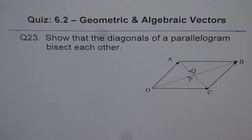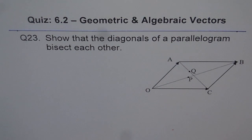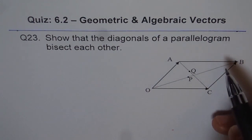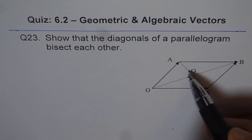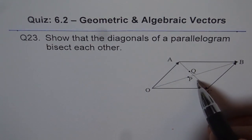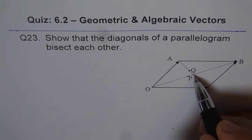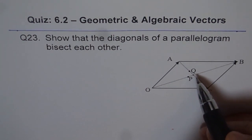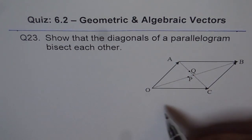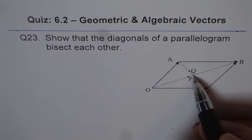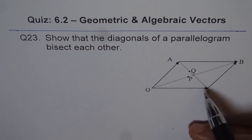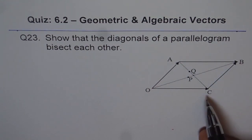Here is the solution for question 23. It says show that the diagonals of a parallelogram bisect each other. When we say bisect, that means these two sides — let's say we have a point where they bisect — that means AQ equals QC and OQ equals QB for the given parallelogram OABC.